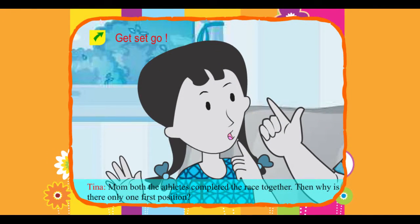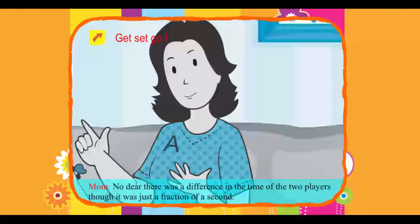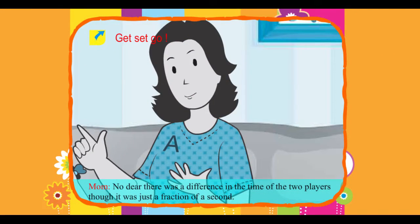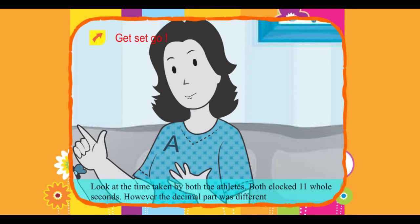Tina asks: Mom, both the athletes competed in the race together — then why is there only one first position? Mom replies: No dear, there was a difference in the time of the two players. Though it was just a fraction of a second, look at the time taken by both athletes. Both clocked 11 whole seconds.